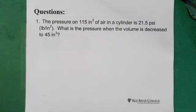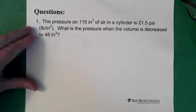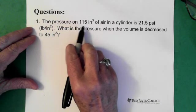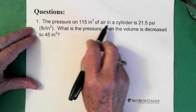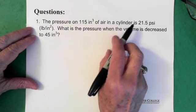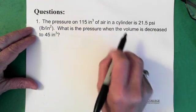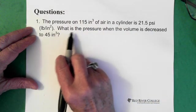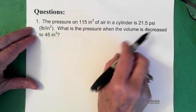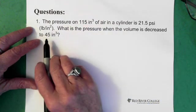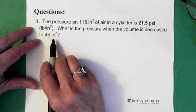Alright, so here we have another question on pressure and volume. The pressure on 115 inches cubed of air in a cylinder is 21.5 pounds per square inch. What then is the pressure when the volume is decreased to 45 inches cubed?